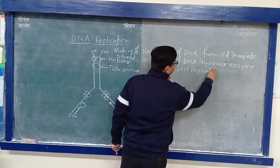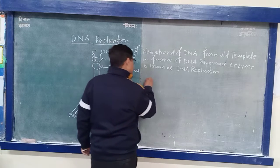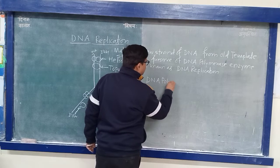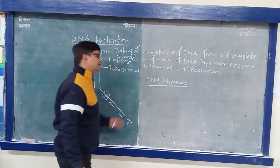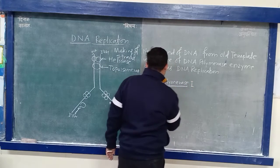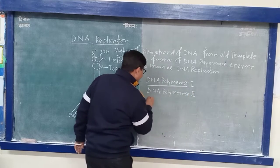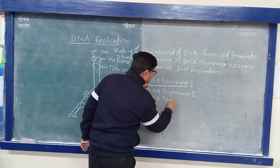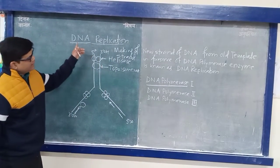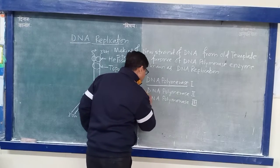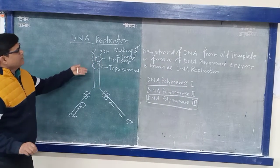So one of the most important enzymes in DNA Replication is DNA Polymerase. Mainly there are different types: DNA Polymerase 1, DNA Polymerase 2, and DNA Polymerase 3. These are the important enzymes in DNA Replication. This DNA Polymerase enzyme plays a vital role for initiation of DNA Replication.